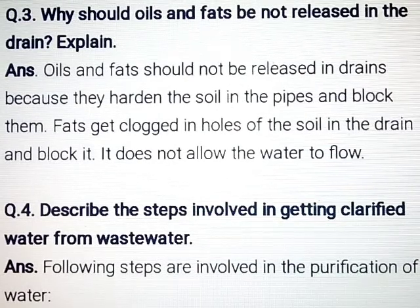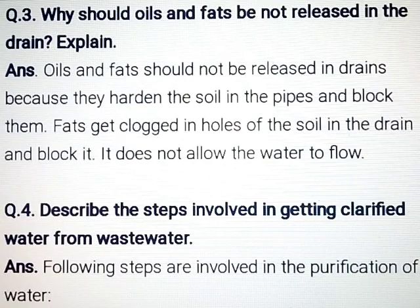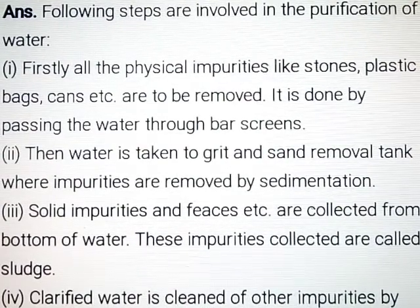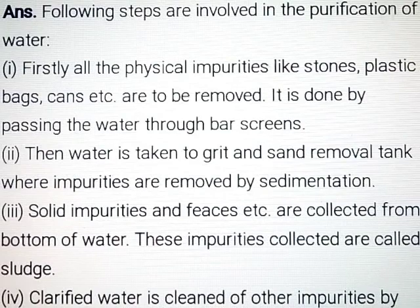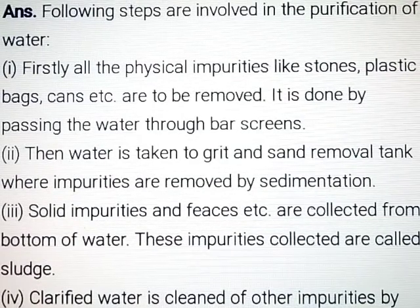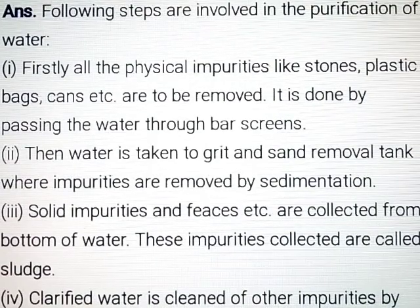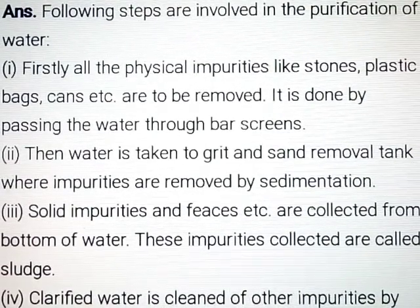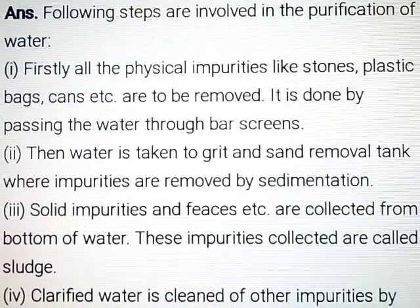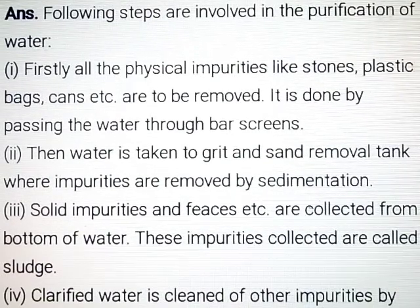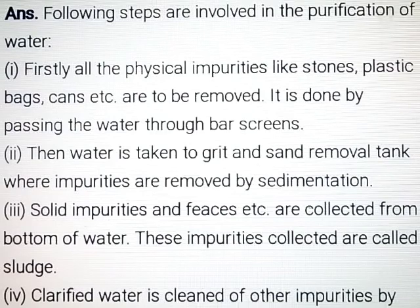Question number 4: Describe the steps involved in getting clarified water from waste water. Answer: Following steps are involved in the purification of water. Firstly, all the physical impurities like stones, plastic bags, and cans are removed by passing the water through bar screens. Then water is taken to a grit and sand removal tank where impurities are removed by sedimentation. Solid impurities and other matter are collected from the bottom of the water, and these collected impurities are called sludge.